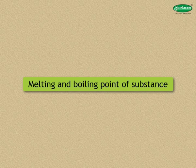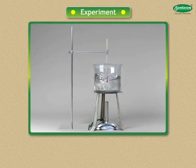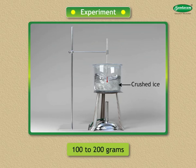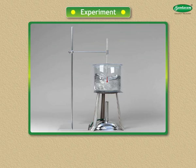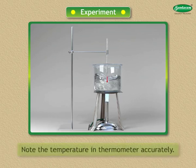Learn about the melting point and boiling point of a substance. Take 100 to 200 grams of crushed ice in a beaker, stand a thermometer in the ice and hold it upright in the clamp of a stand. Place the beaker on a wire gauze on a stand and heat it.